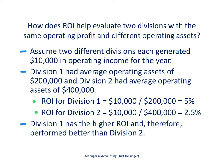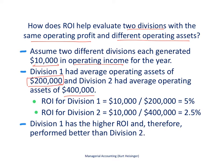Here's a simple example to reinforce that concept. Let's say we have two different divisions, and each division has the exact same operating profit but different operating assets. Assume that two different divisions each generated exactly $10,000 in operating income for the year. We can't simply say they performed identically — we have to look at the assets required to generate that profit. Division one had average operating assets of $200,000, and division two had average operating assets of $400,000.